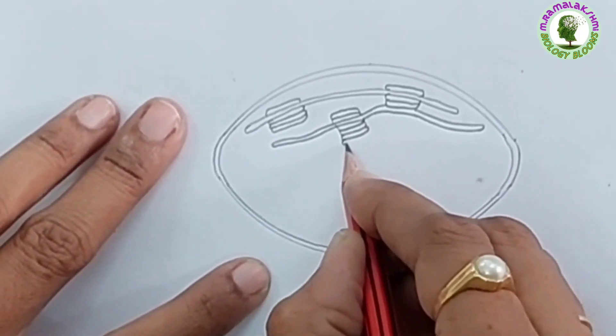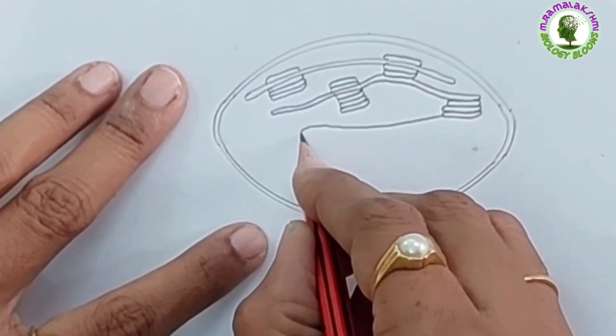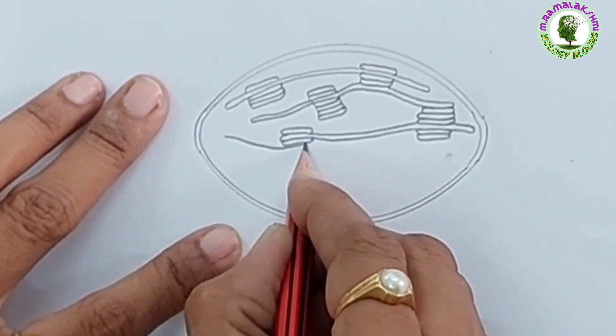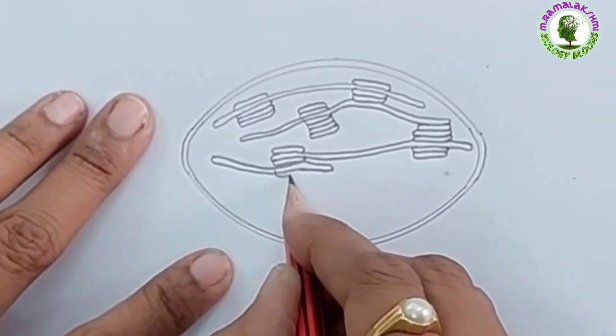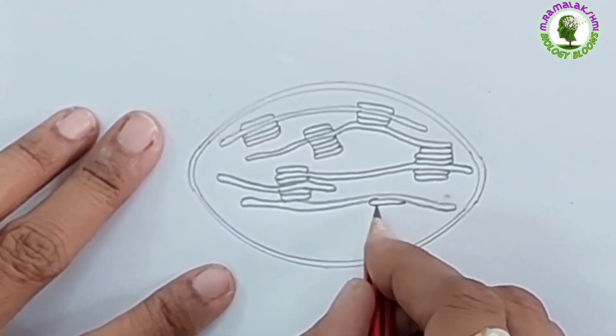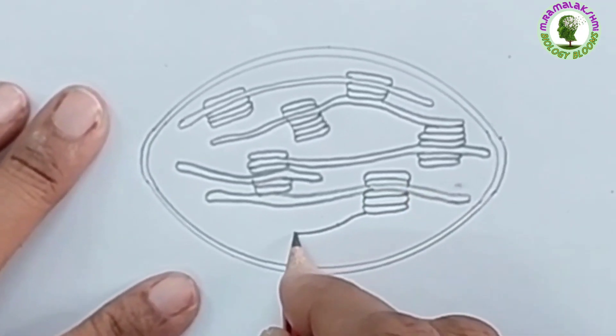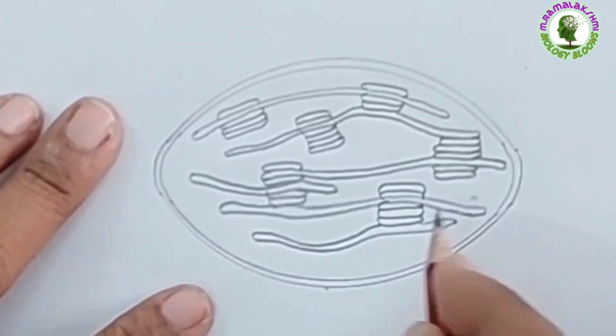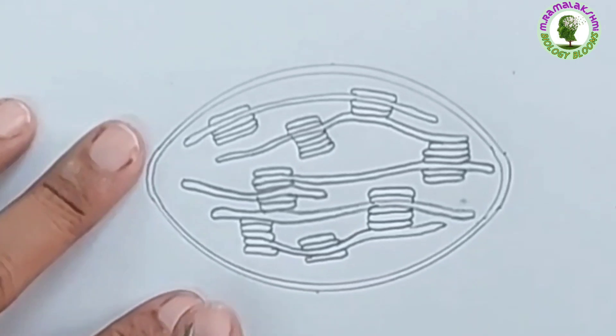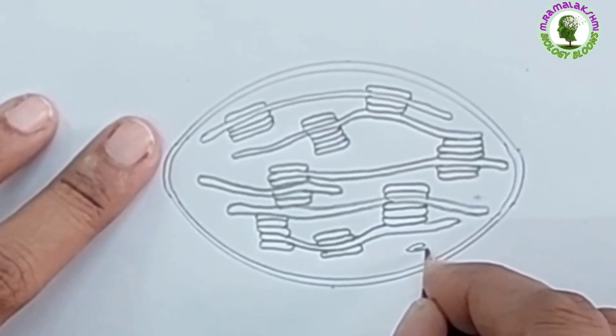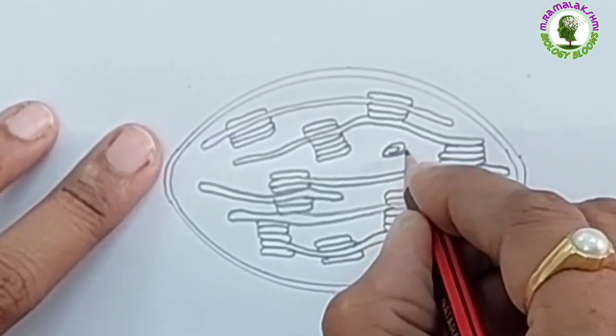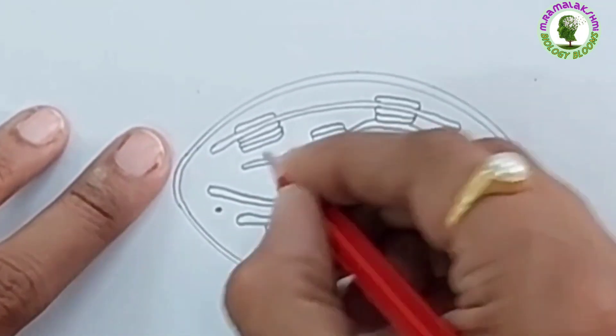According to your diagram, you can draw the thylakoids. Now, draw a starch grain like this. Put some dots as lipids.